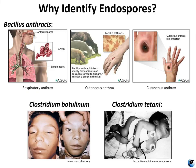Endospore staining techniques are important for identifying Bacillus and Clostridium. These are two genera of endospore-producing bacteria that contain clinically significant species. For example, Bacillus anthracis, which causes anthrax, has been of particular interest because of concern that its spores could be used as a bioterrorism agent. Clostridium difficile is responsible for the hospital-acquired infection known as C. diff, and Clostridium tetani is the species responsible for causing tetanus.